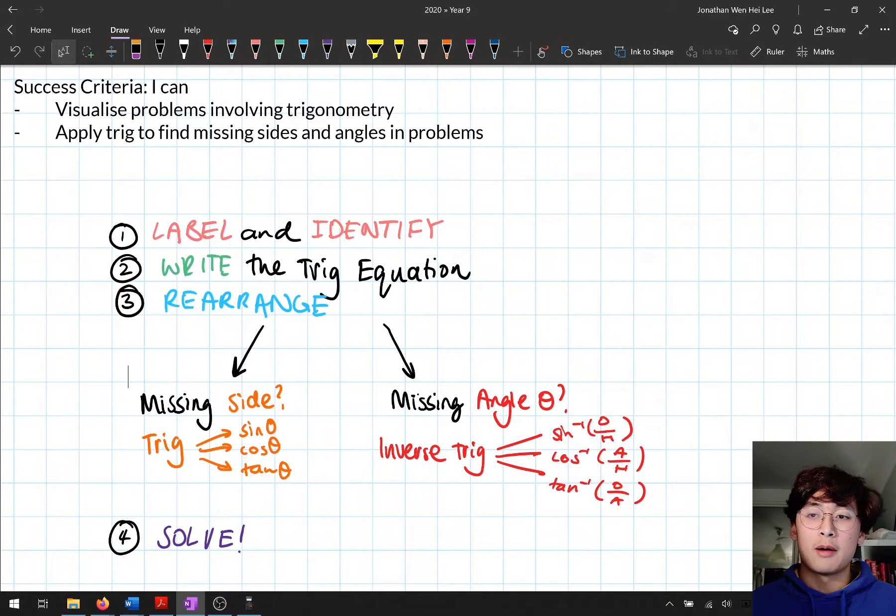Then the fourth step is to solve the problem. Put it into calculator, do all those steps. And the fifth and final step is to check your answer. If it looks wrong it probably is wrong. Have a look at the answer that you got and think about what that would look like in real life. Is that a realistic answer that you've gotten? That's what we're going to be applying in today's lesson.